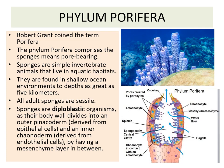Sponges are simple invertebrates which live in the aquatic environment. They are found in shallow oceans as well as in depths as great as 5 kilometers. All adult sponges are sessile.